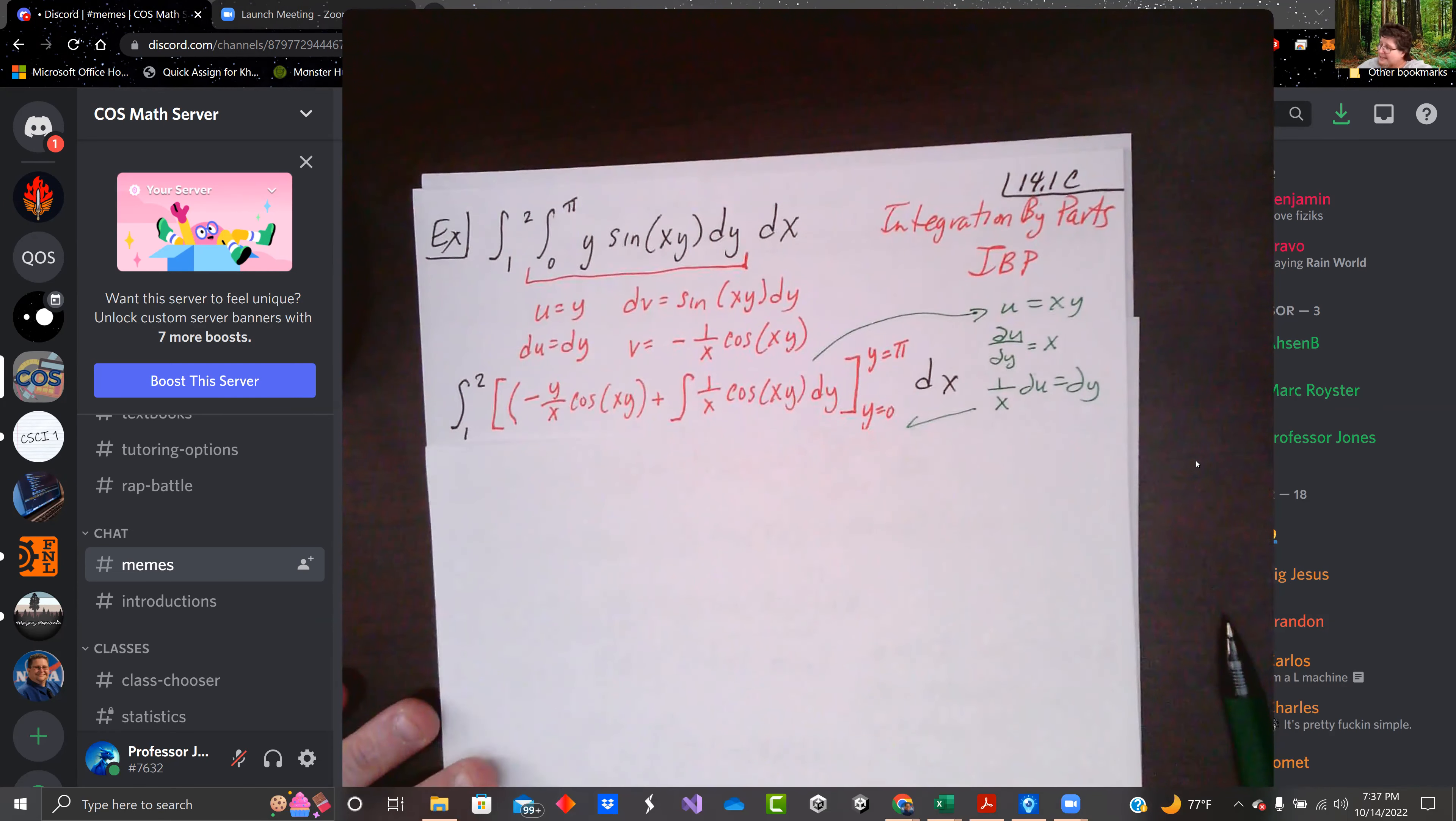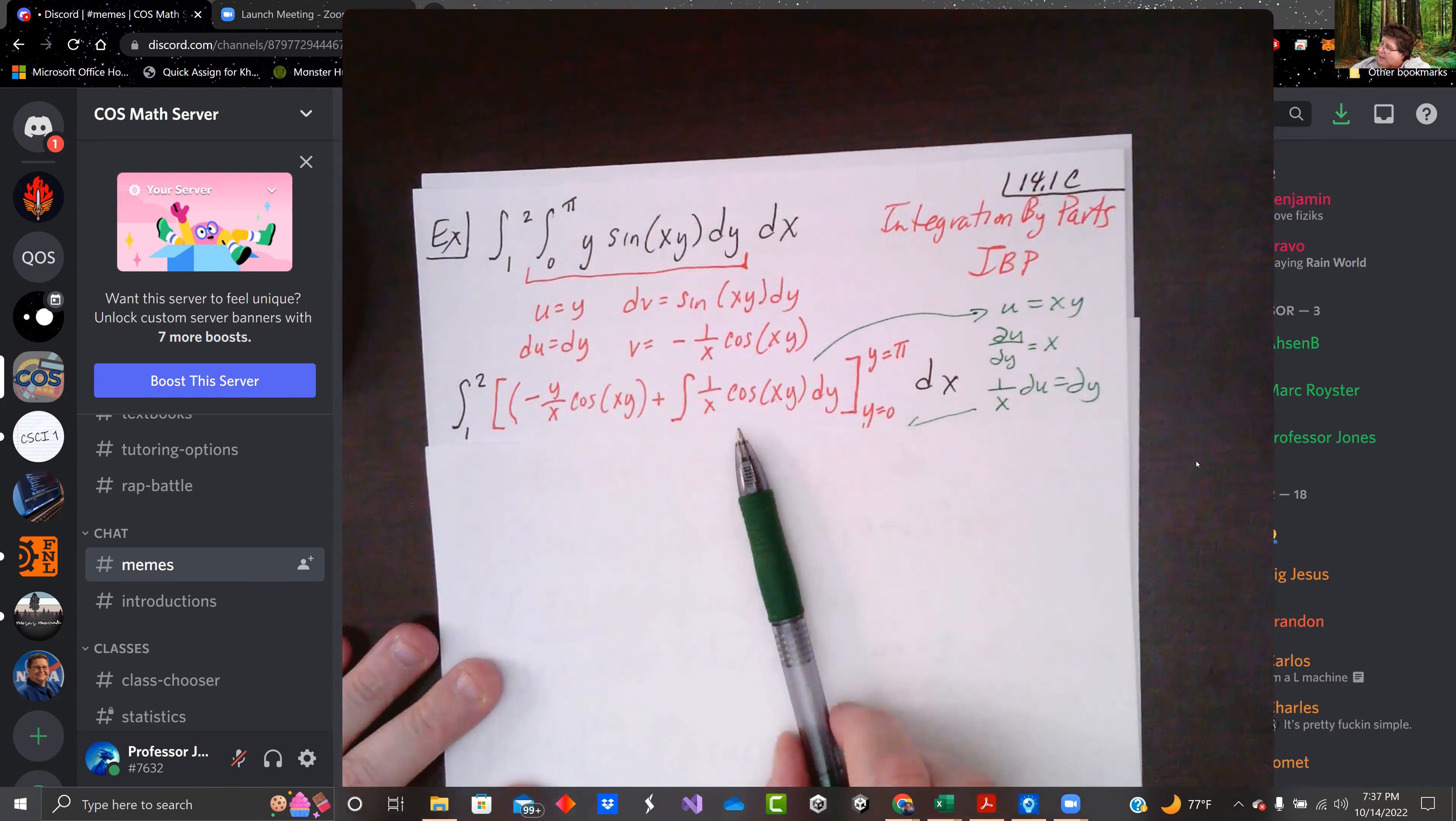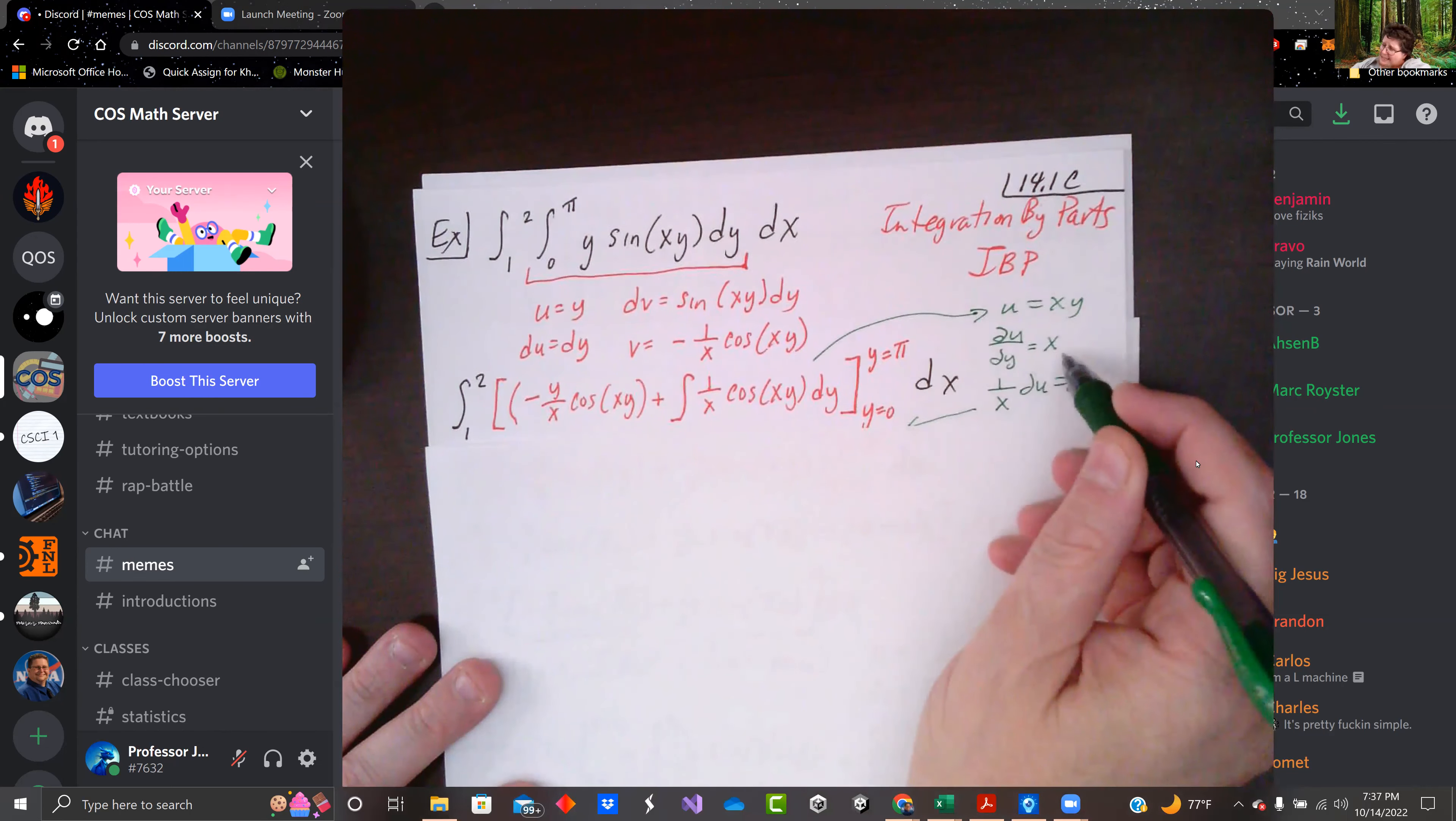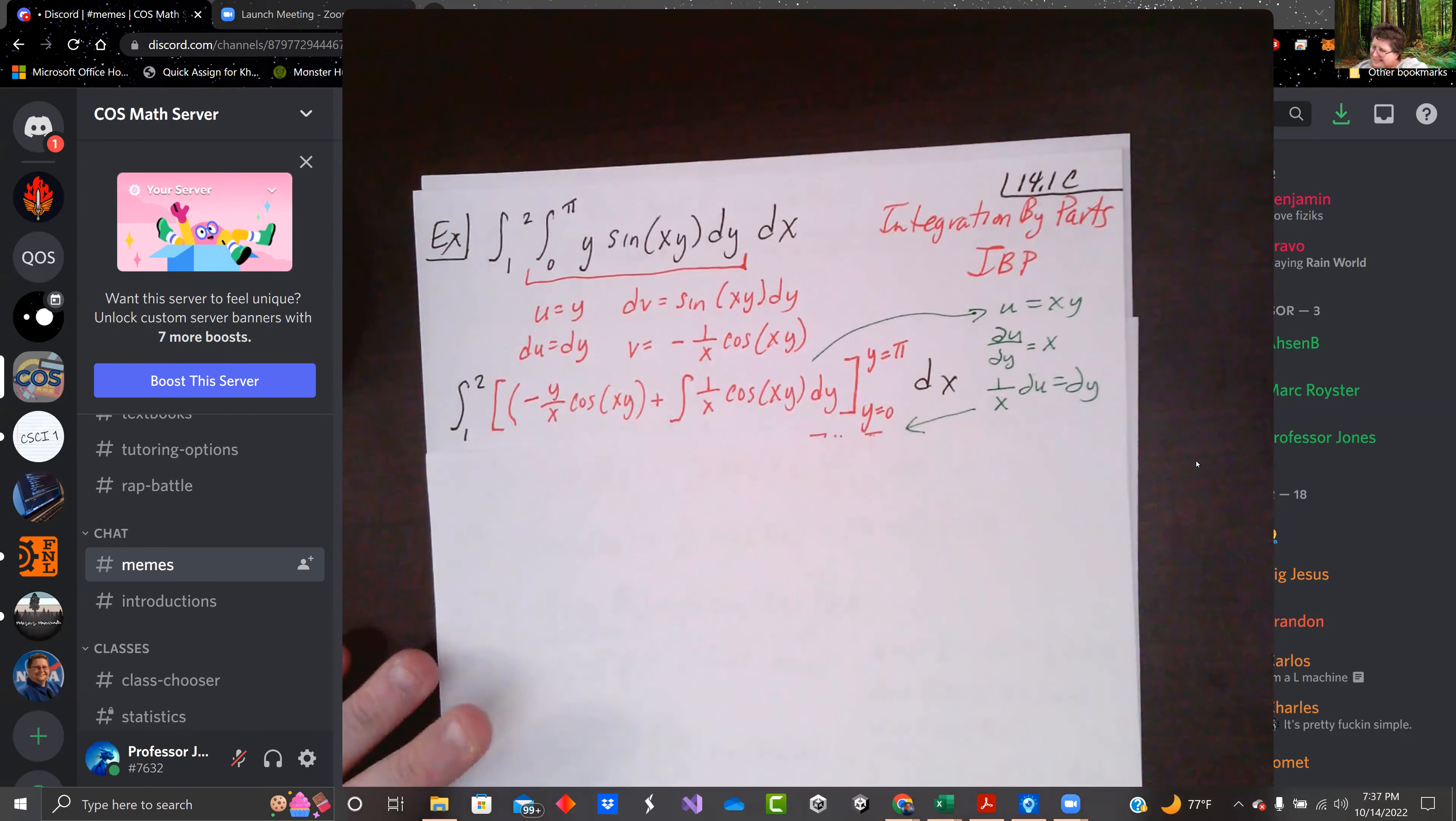My integral becomes this. Everything in red is what this translated down to. I didn't like this, so I did a quick u-sub. I said u equals xy, so the partial derivative with respect to y was x, which means I could write dy as du with one over x.